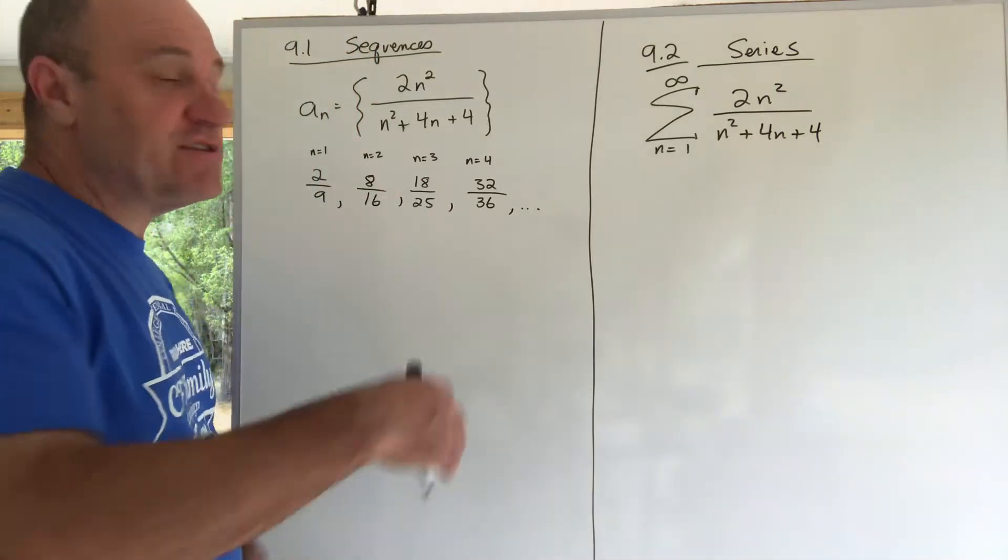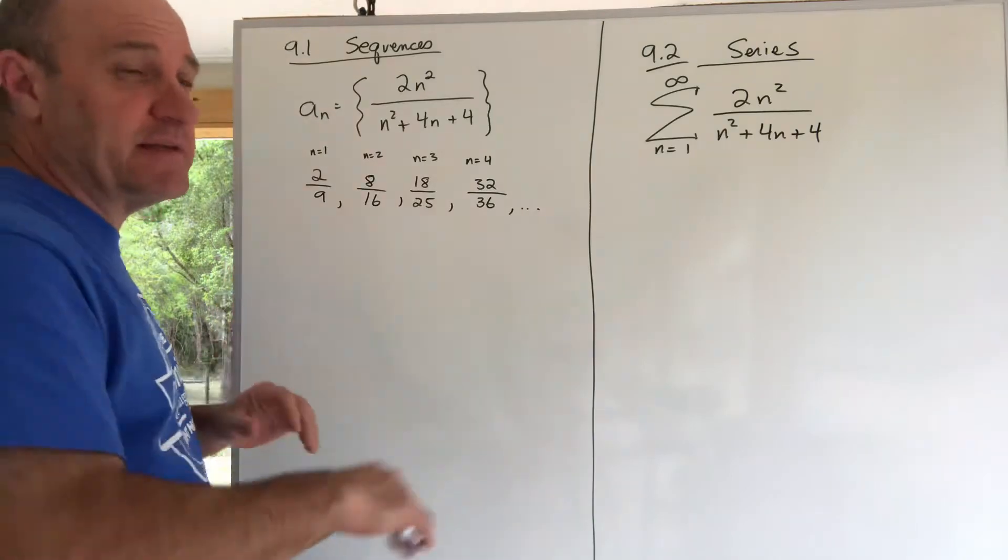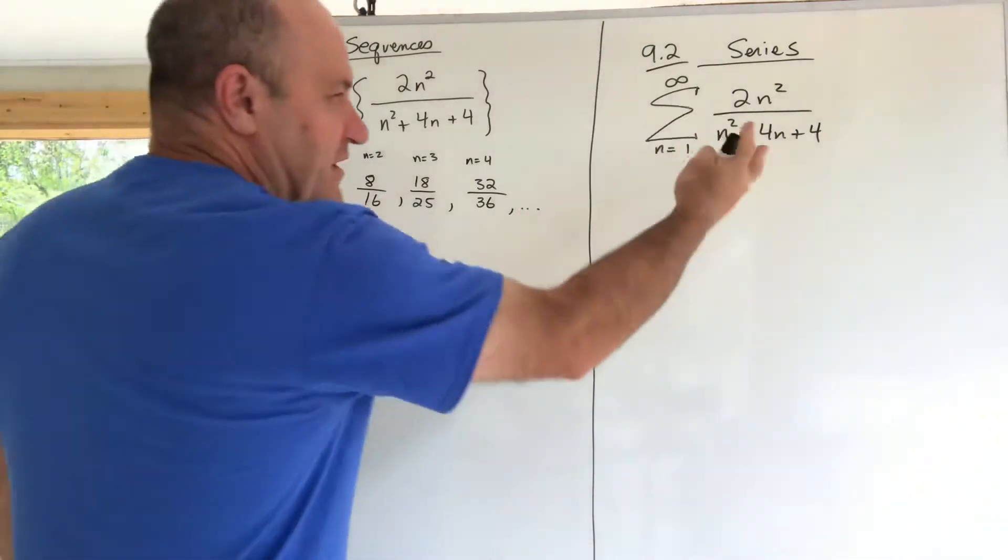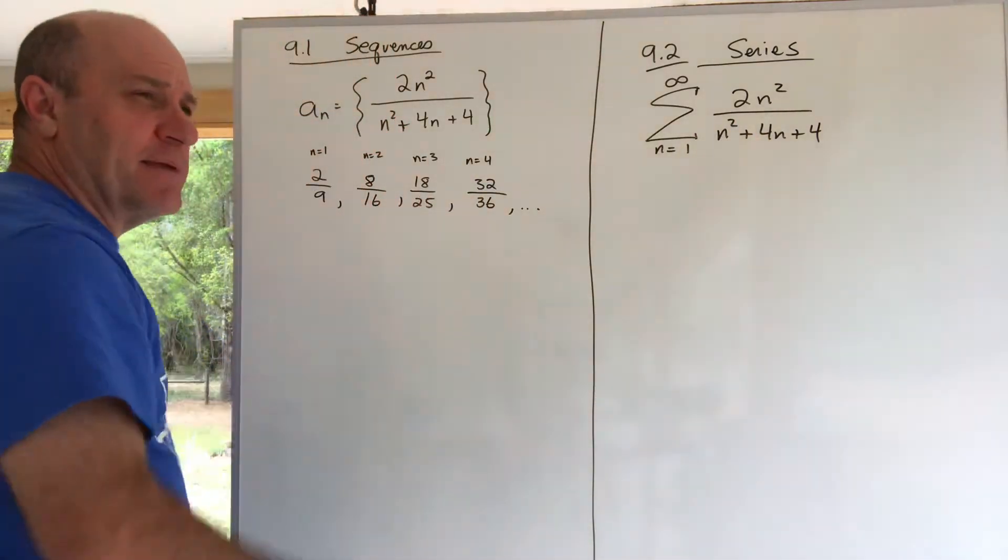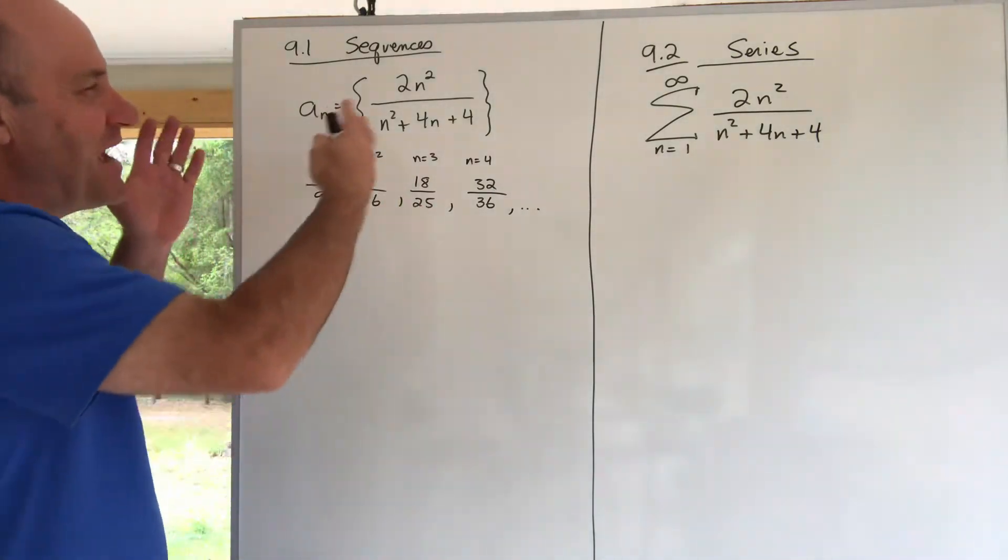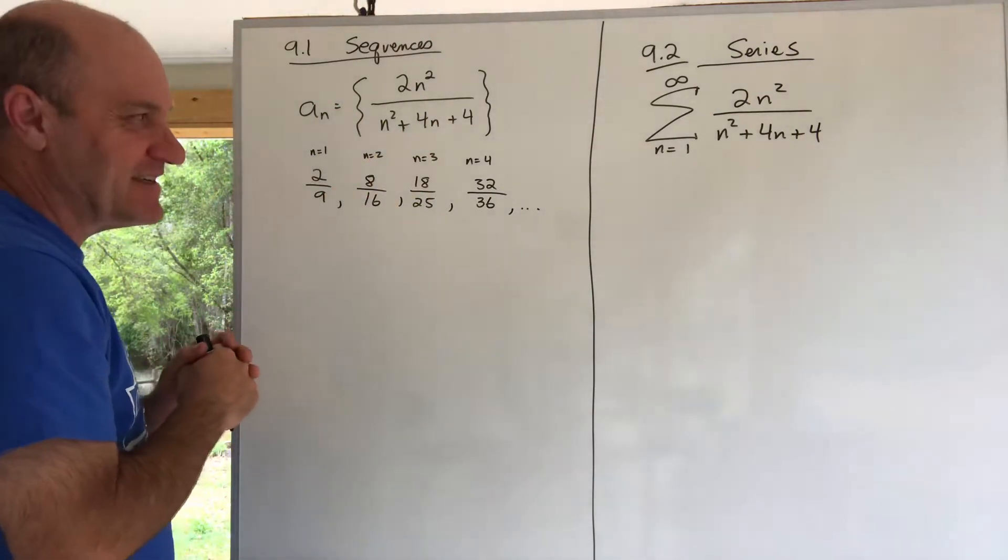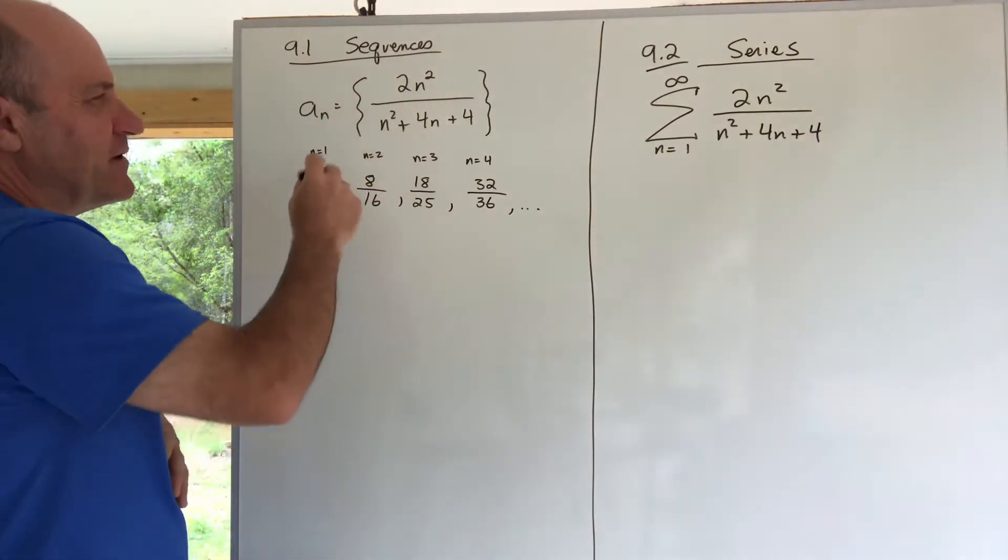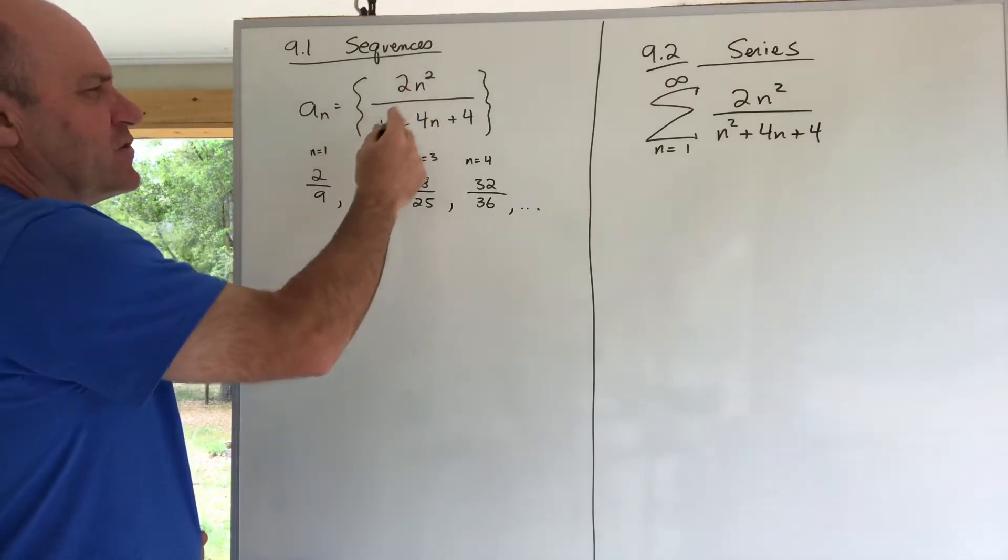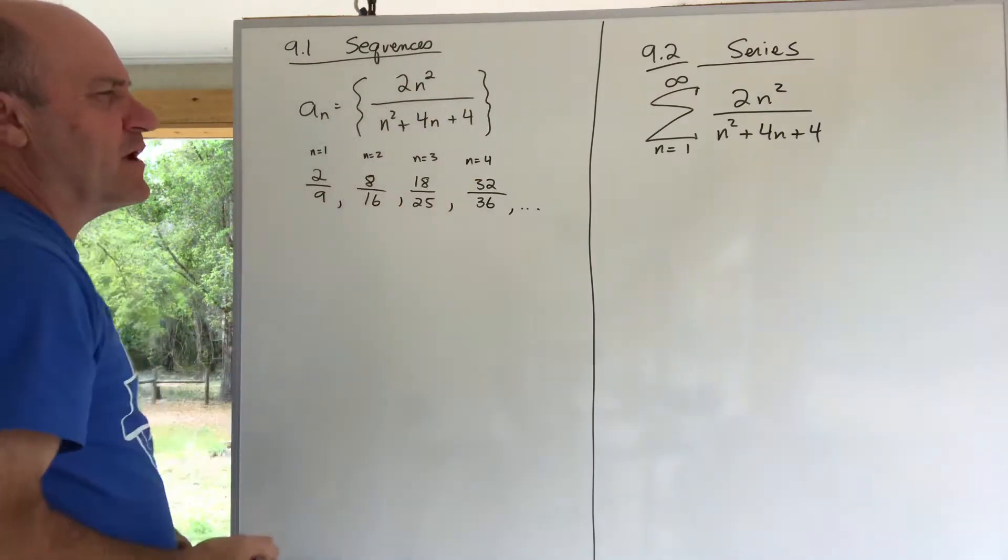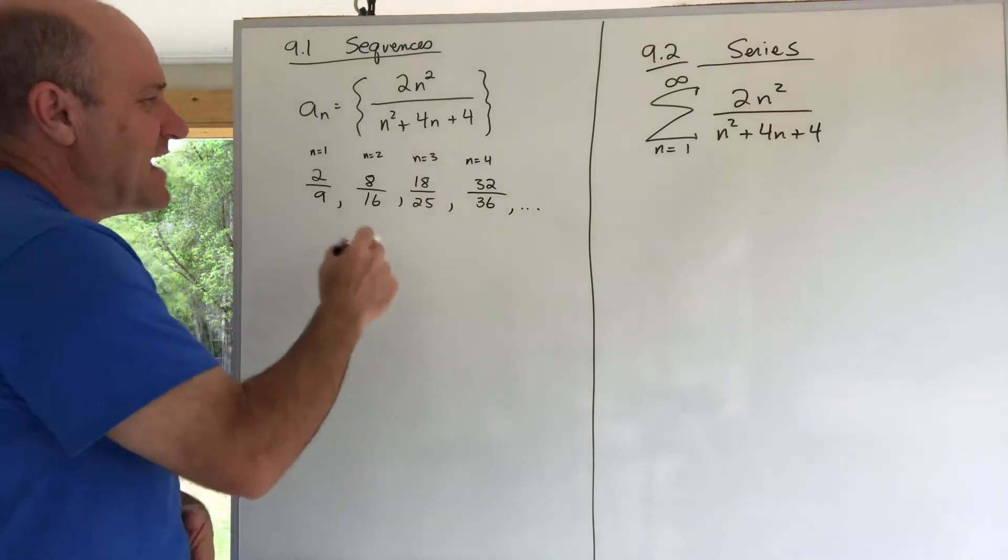Welcome back. As we move into Chapter 9, there are two big topics - well, really one big topic and a slightly more minor topic. In 9.1, we discuss sequences. So I just made up a sequence here: 2n² over n² + 4n + 4.